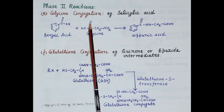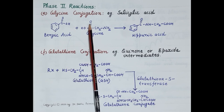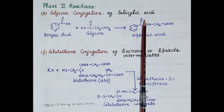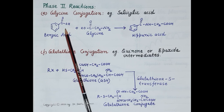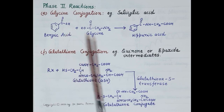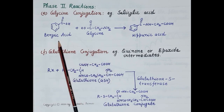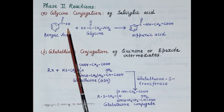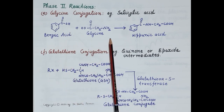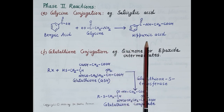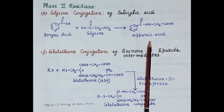The next type of phase 2 reaction is glycine conjugation. Salicylates and other drugs with a carboxylic acid group are conjugated with glycine, and this glycine conjugation is a minor pathway of metabolism. For example, benzoic acid with its carboxylic acid group conjugates with glycine, and this conjugated derivative of benzoic acid is excreted in the urine.